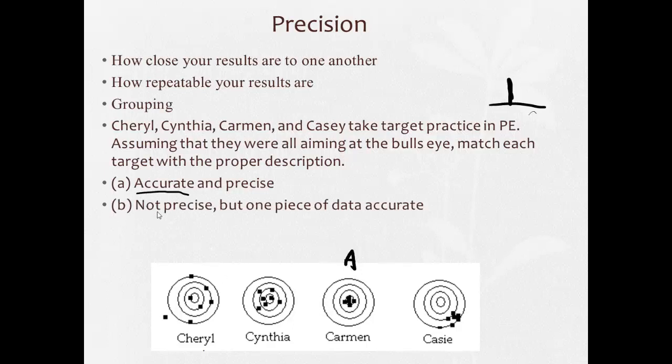Not precise, so they're not clumped together. They're spread out. But one piece of data accurate. Well, Cynthia here had one in the bullseye, but everything else is spread out. So Cynthia would be B.